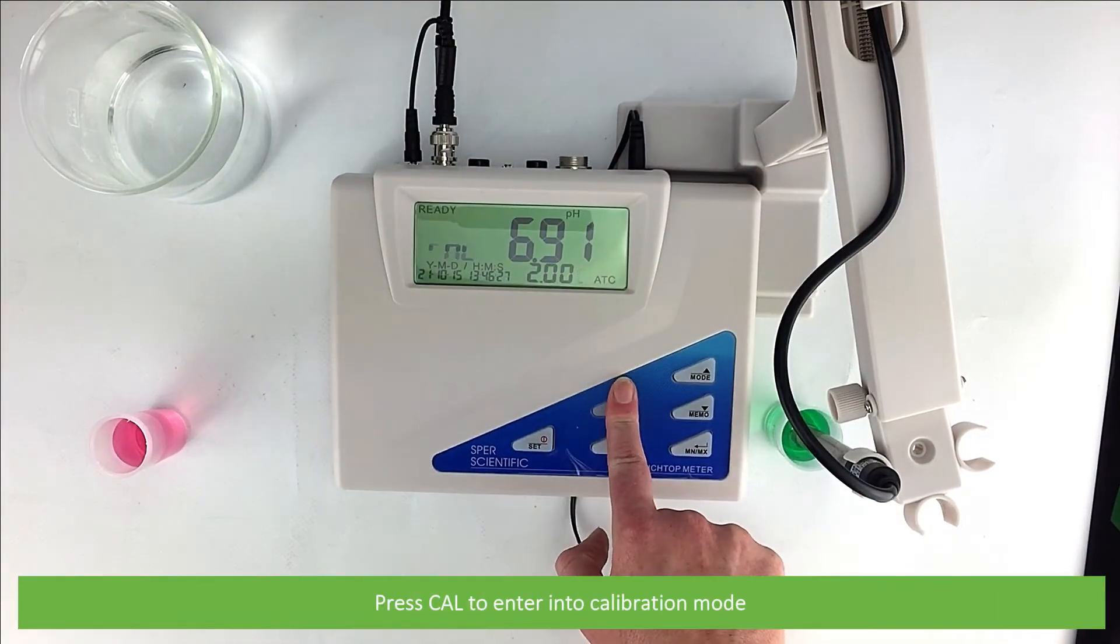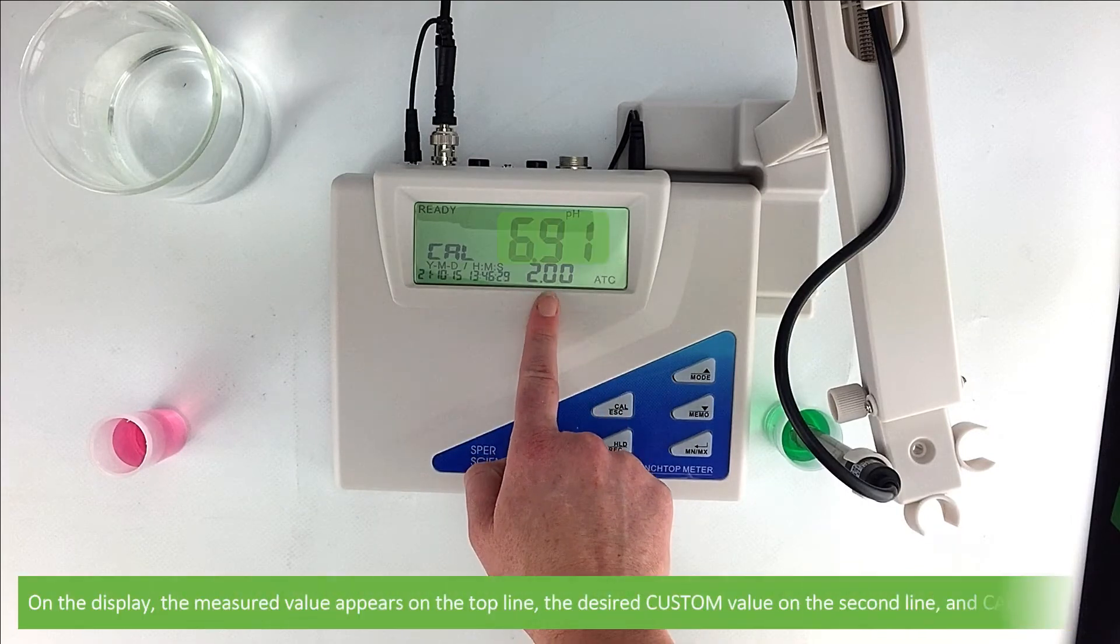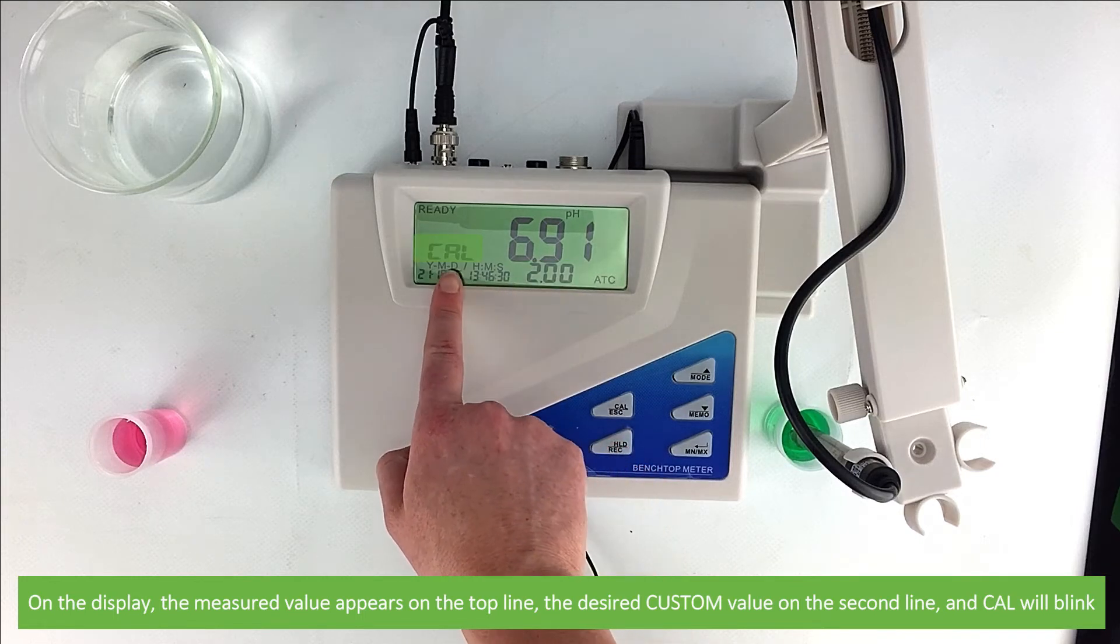Press CAL to enter into calibration mode. On the display, the measured value appears on the top line, the desired custom value on the second line, and CAL will blink.